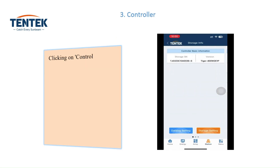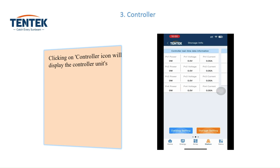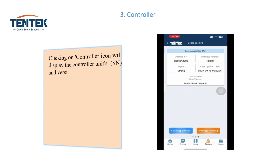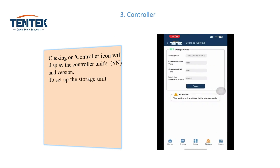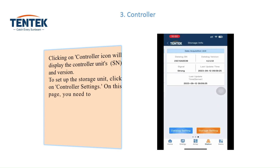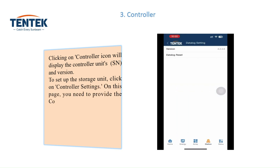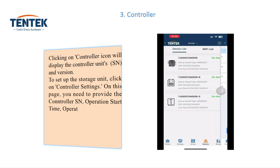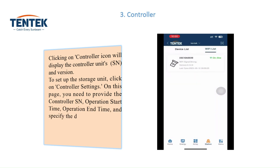Clicking on the controller icon will display the controller unit's serial number (SN) and version. To set up the storage unit, click on controller settings. On this page, you need to provide the controller SN, operation start time, operation end time, and specify the desired limit for the inverter's output during this period.